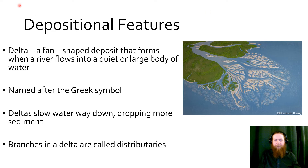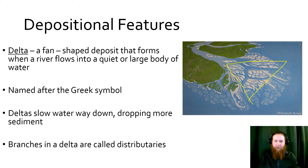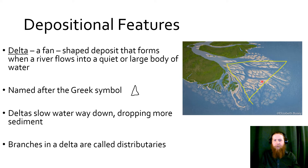We get some depositional features, and the most prominent is the delta — a fan-shaped deposit that forms when a river flows into a quiet or larger body of water. It's named after the Greek symbol for delta, which this overall structure resembles. This creates more room for the water to slow down, so more material gets deposited here. The little branches of water running through it are called distributaries, distributing water and material all around the structure.